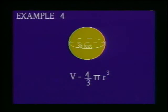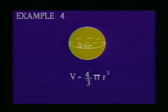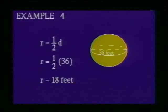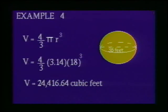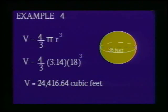Example 4: A spherical water tank has an inside diameter of 36 feet. Determine the volume of water that the tank will hold. Because the formula for the volume of a sphere, V equals four-thirds times pi times R cubed, is given in terms of the radius, the first step is to find the radius. The radius is one-half the diameter, so the radius is one-half of 36, which is 18 feet. Using 3.14 as the approximation for pi and substituting 18 for R, we have V equals four-thirds times 3.14 times 18 cubed. Solving for V, the volume of water held by the spherical tank is 24,416.64 cubic feet.